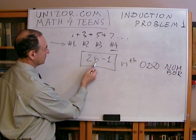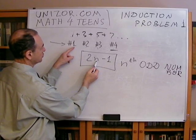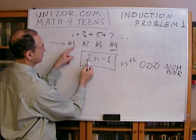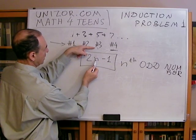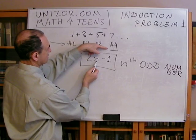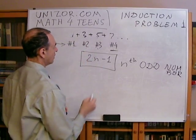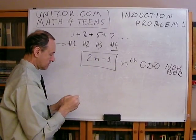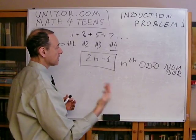If n equals one, the first number is one. If n equals two, two times two, four minus one is three. If n equals three, three times two, six minus one, five. And if n equals four, four times two is eight minus one, seven. So, this is the generalized formula which gives you the nth odd number.